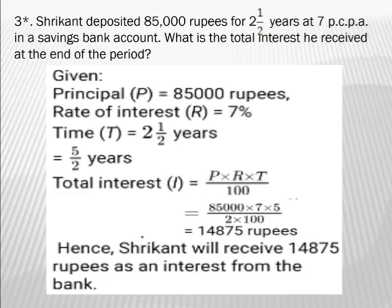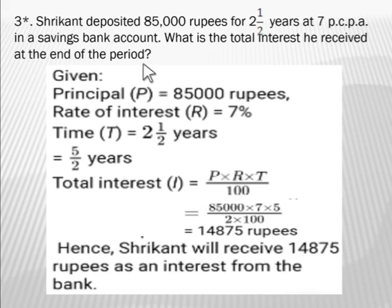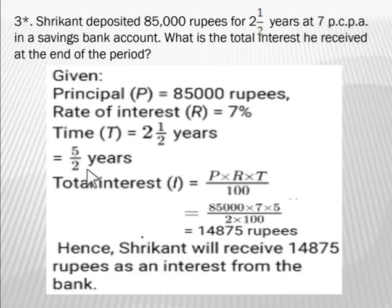Third example: Shrikant deposited 85,000 rupees for two and a half years at 7% per annum in a savings bank account. What is the total interest he received at the end of the period? What is given: principal = 85,000 rupees; time = 2.5 years, which can be written as 5/2 years; rate of interest = 7% per annum. A star is placed on this example because the time is given as a mixed number, unlike the previous examples where time was a whole number.